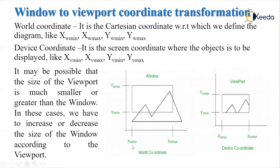In the x direction, the coordinates of the window are xw_min and xw_max, where W stands for window. In the y direction, we have yw_min and yw_max — this is the maximum coordinate and this is the minimum coordinate, and we have selected this area from the whole scene. Likewise, for the viewport, we have coordinates xv_min and xv_max, where V stands for viewport, and yv_min and yv_max. In this way, we can decide the coordinates for the window and the viewport. It may be possible that the size of the viewport is much smaller or greater than the window — the size may be different or the same. In such cases, we have to increase or decrease the size of the window according to the viewport.